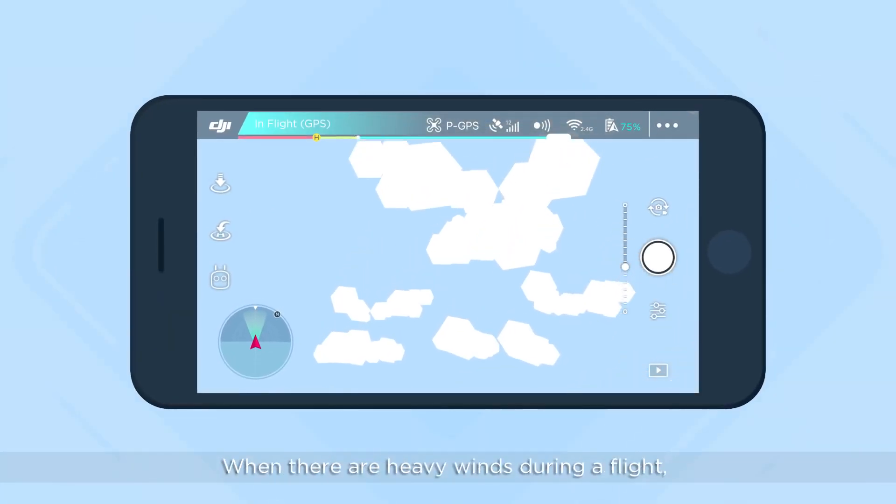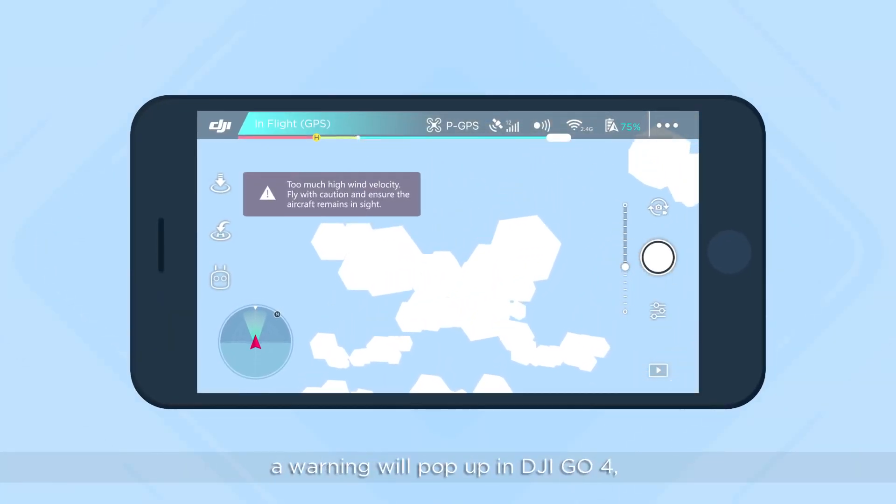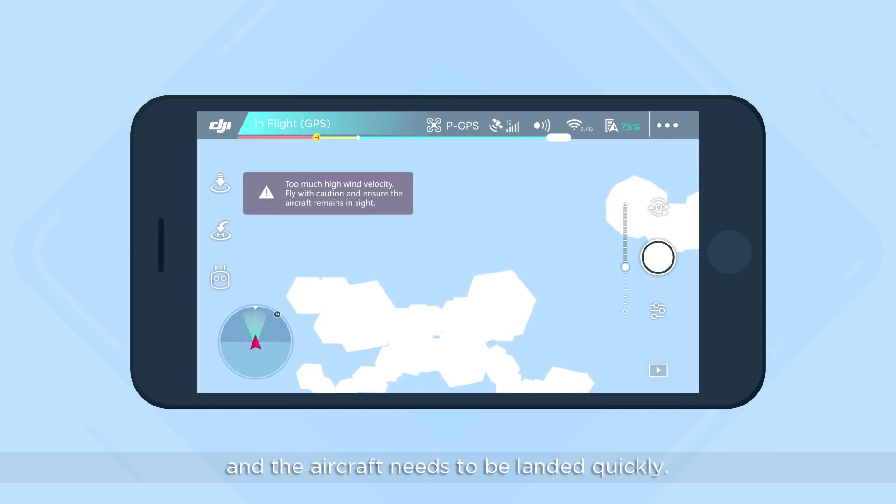When there are heavy winds during a flight, a warning will pop up in DJI GO 4, and the aircraft needs to be landed quickly.